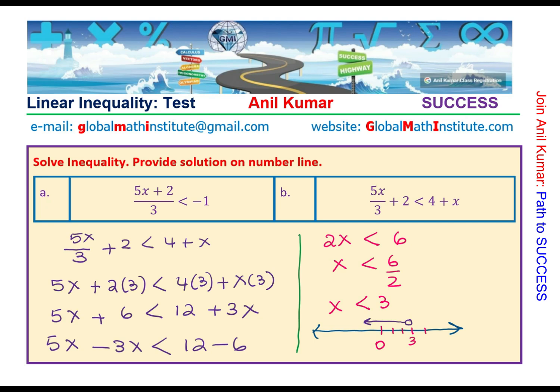Make sense? So, that is how we are going to show the solution on a number line. Is that clear to you? Open circle means 3 is not included. Perfect. I hope that makes sense.